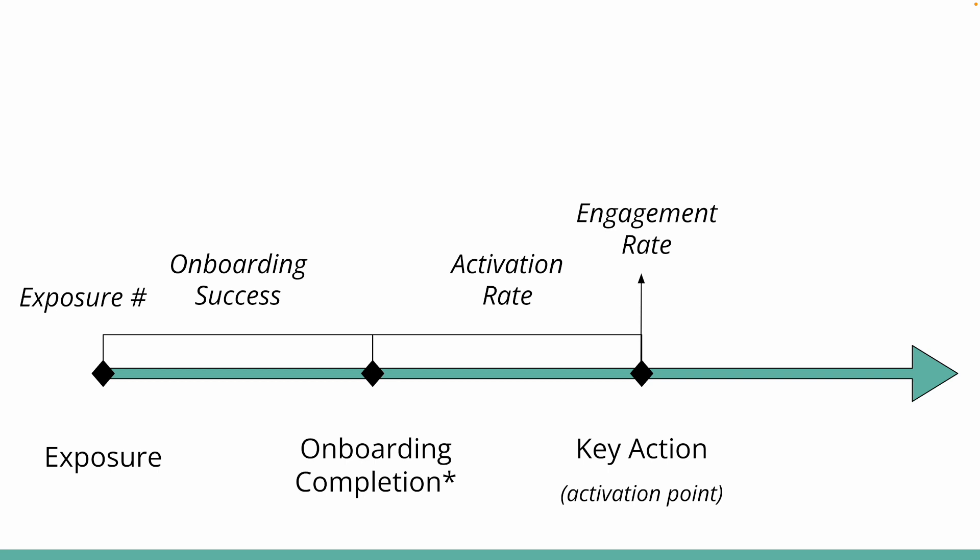And then we have the retention rate. Retention is defined as the portion of your users who continue to take key actions in your product a fixed amount of time after they first activated. For example, 30-day retention looks at the number of people who are still active 30 days after they activated, divided by the number of users who activated in the first place. You can use different lengths of time based on your product, but 30 days and 90 days are the two most widely used.